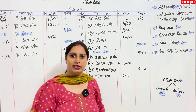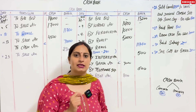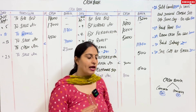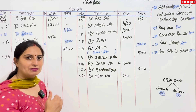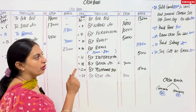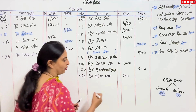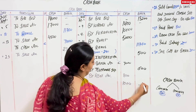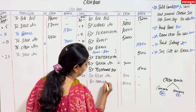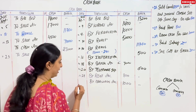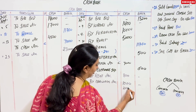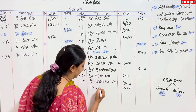Drew cash for personal use ₹1,000 — cash column credit side, write 'By Drawings Account.' April 29: paid salary ₹2,000 — cash is going, so enter ₹2,000 on the credit side and write 'By Salary Account.'